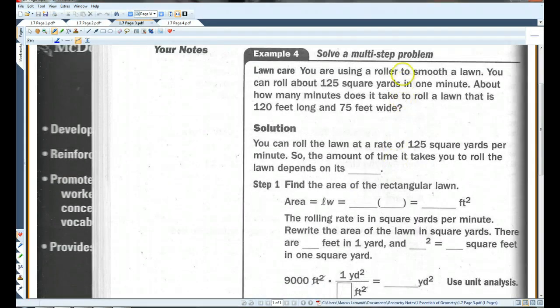You are using a roller to smooth the lawn. You can roll about 125 square yards in one minute. About how many minutes does it take to roll a lawn that is 120 feet long and 75 feet wide? So, you can roll the lawn at a rate of 125 square yards per minute. So, the amount of time it takes you to roll the lawn depends on its area. The first thing we need to do is we need to find the area of the rectangular lawn. We know it's a rectangle.